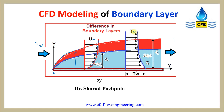Here T-infinity is the free stream temperature, T-w is the wall temperature, and wall temperature is greater than free stream temperature. In this case, thermal boundary layer is formed across the flat plate, and delta-theta-T is the thickness of the thermal boundary layer. Temperature is a function of y, which varies across the boundary layer. Away from the free stream, there is no change in temperature and velocity.